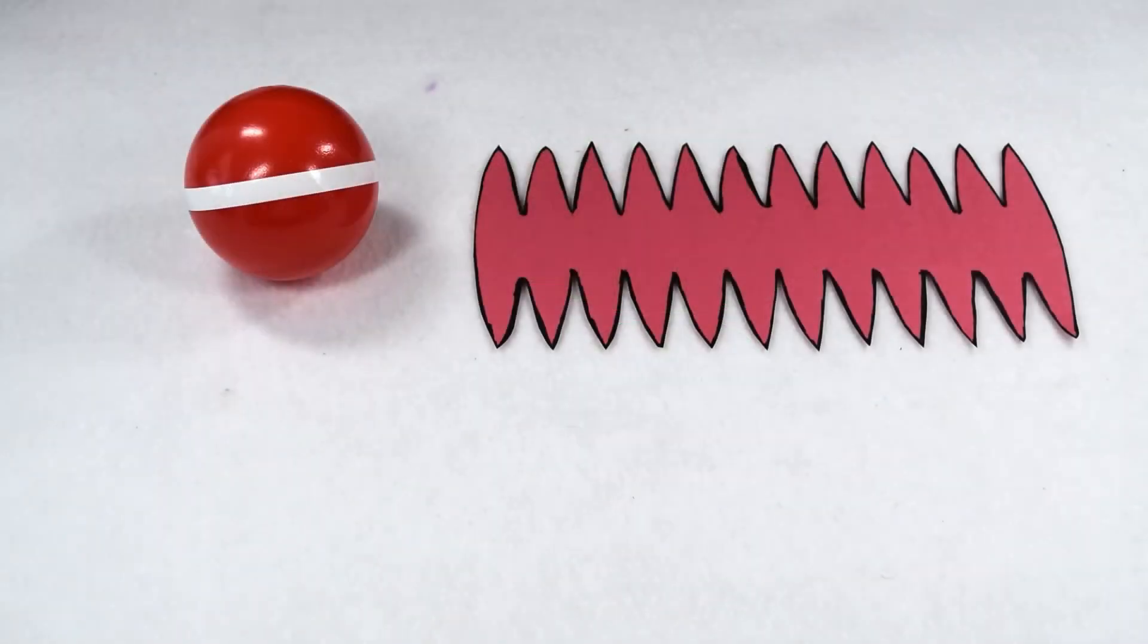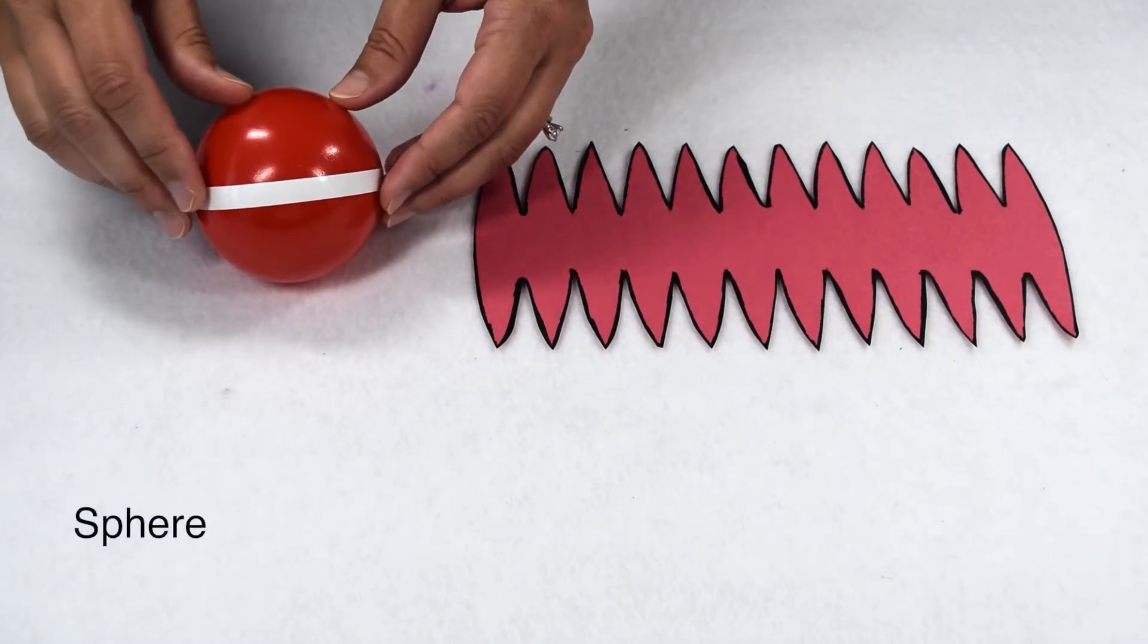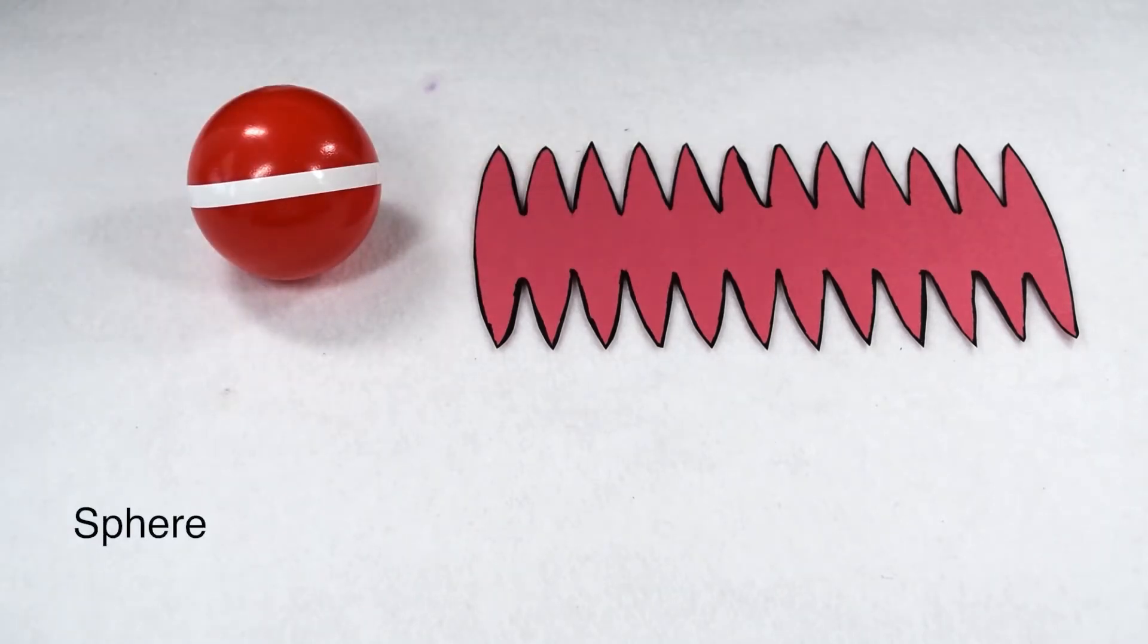A third three-dimensional figure that is not a polyhedron is a sphere. A sphere is a solid figure, it's perfectly round like a ball. It does not have any separate faces, and all points are equidistant from its center.